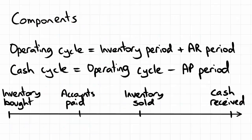We can break these down into their components. The operating cycle consists of the inventory period and the accounts receivable period. The inventory period is the amount of time that you are holding inventory — once you've purchased it, how long will it take to sell it? The accounts receivable period is the amount of time between making a sale on credit and actually receiving the cash from that sale. Together, these tell you how long it'll be between getting inventory and getting money.